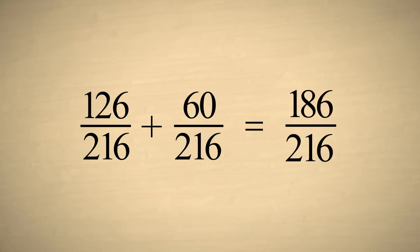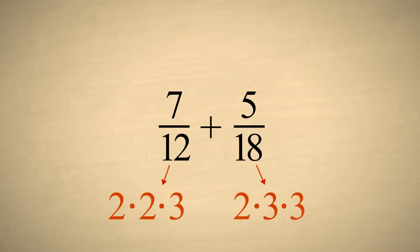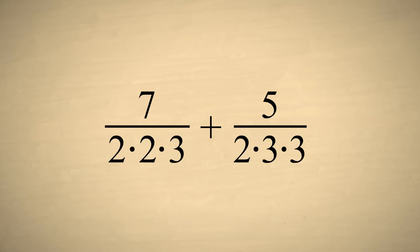Now let's try it again using the least common denominator. We'll start with the same fractions and factor the denominators. Now we can see that the first denominator only needs an additional factor of three.